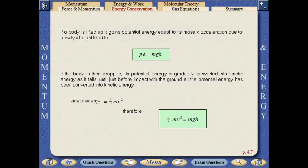If a body is lifted up, it gains potential energy equal to its mass multiplied by acceleration due to gravity multiplied by the height it is lifted to.